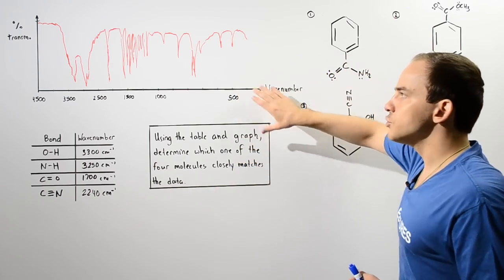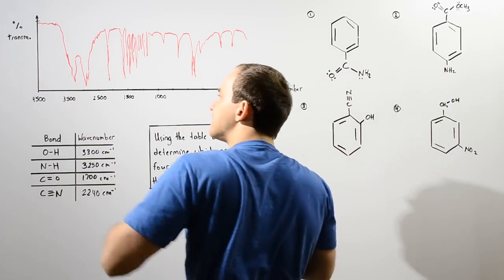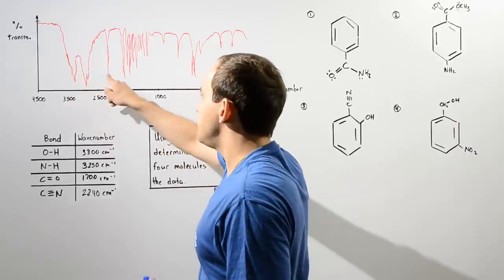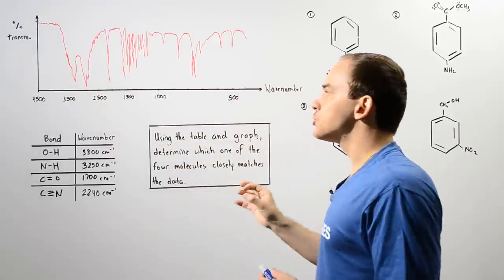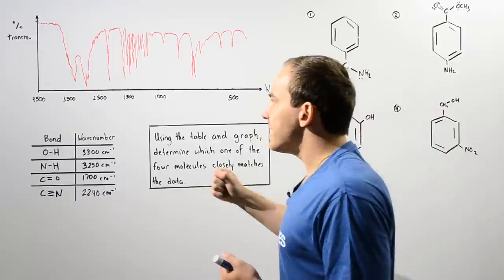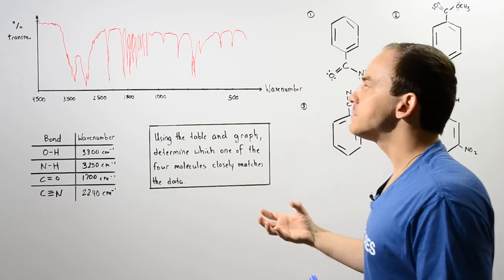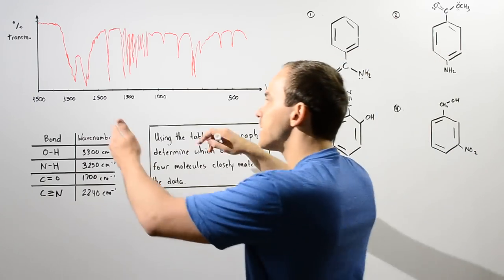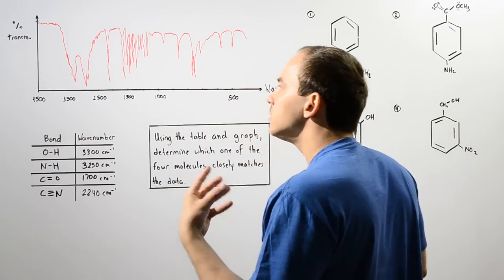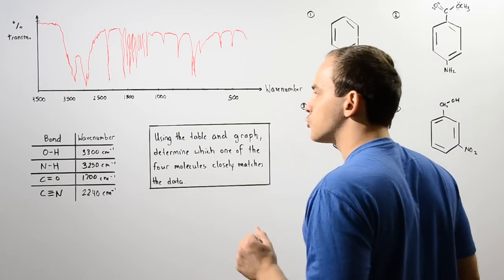According to this graph, the x-axis is the wave number and the y-axis is the percent transmitted. Each one of these dips corresponds to a chemical bond that absorbed that energy, so we can use these dips to determine the different types of chemical bonds that our molecule has. The higher up we go along the y-axis, the less energy is absorbed by the chemical bond and the more is transmitted.